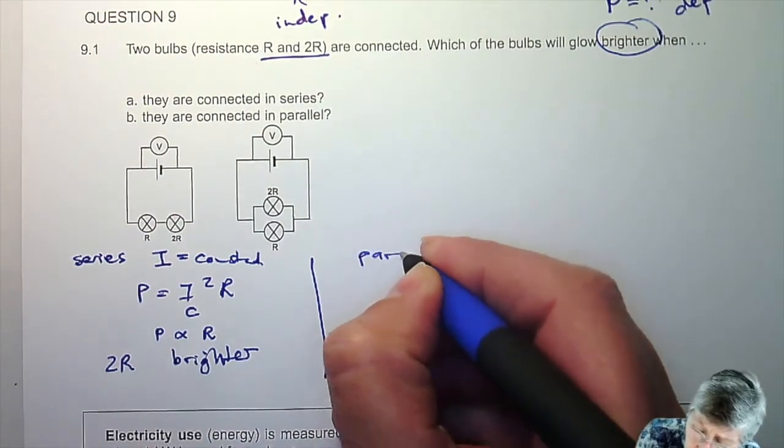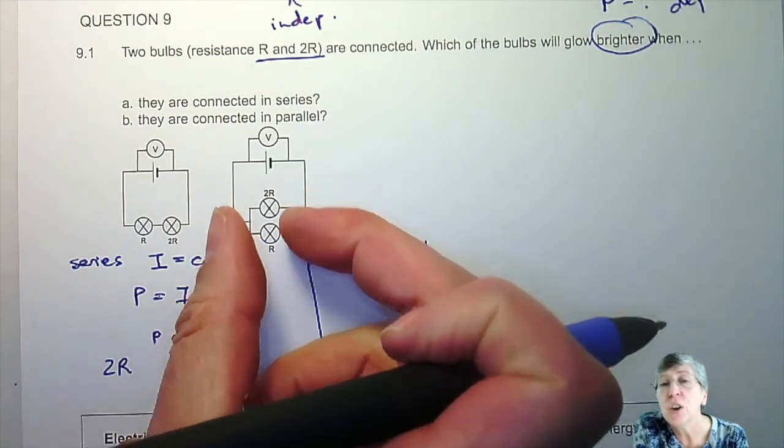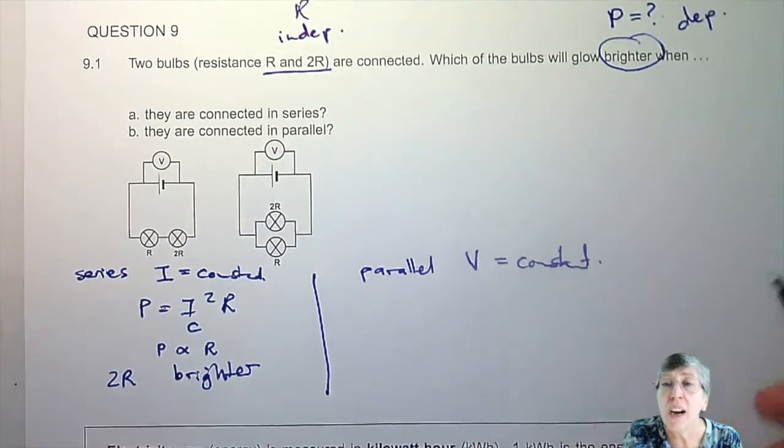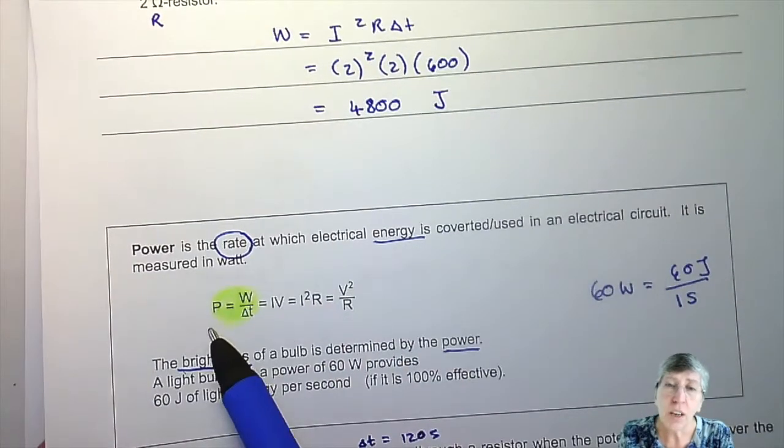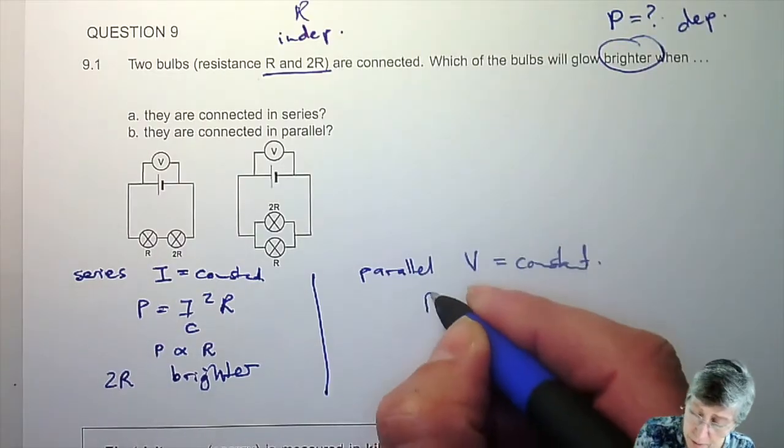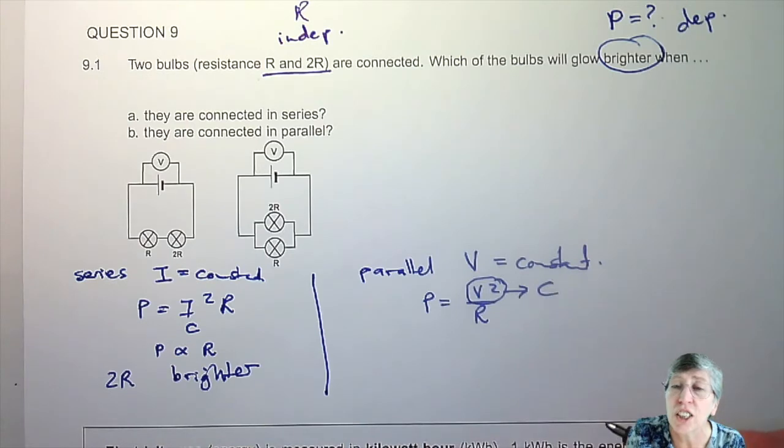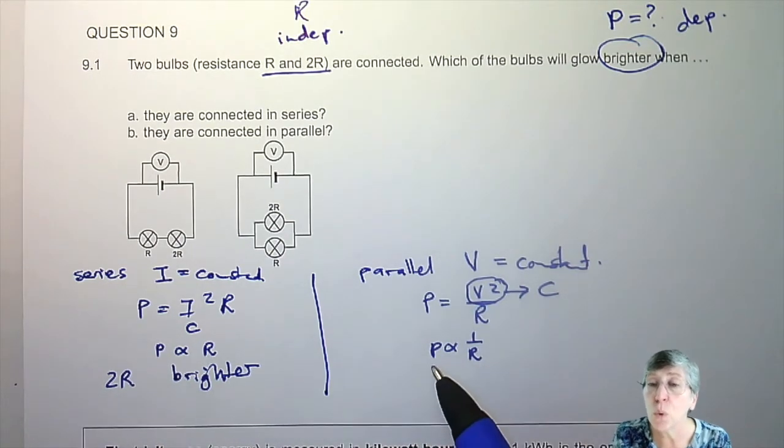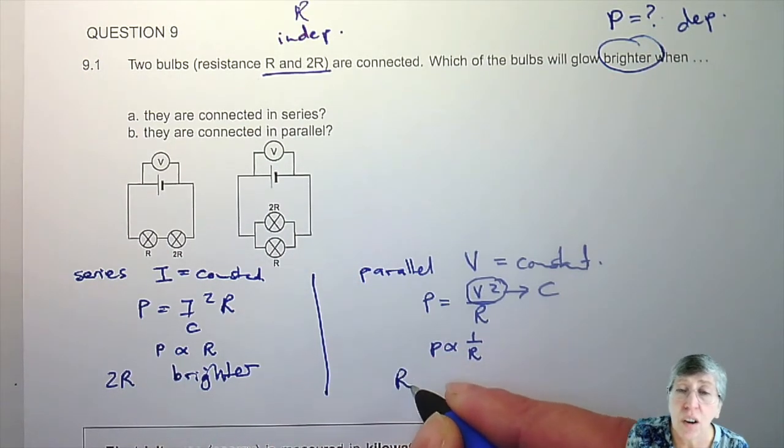But then we also do have to do the same thing when they are connected in parallel. Now in parallel what will be the constant? If they're in parallel, remember the potential difference over the top and the bottom is the same. So for them V is my constant. So now I need an equation with my dependent and independent and V because I know V is a constant. If I look at all the available equations I'm going to use P = V²/R. And the reason why I use this one is because I know that one is a constant and then P will be inversely proportional to R. Which means the bigger the R the smaller the P.